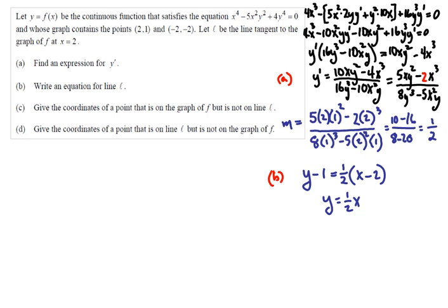For part C, what we're asked is to give the coordinates of a point that is on the graph of F, but is not on line L. So we want a point on the graph, but not on the line. Well, how do the graph and the line relate to each other? Recall that if you have a curve, and a tangent to that curve at some point, then the curve and the tangent line are equal to each other, or have the same x and y value at the point of tangency.